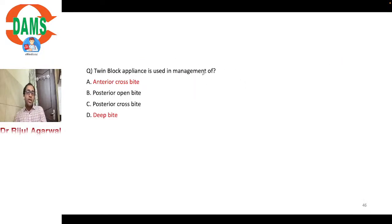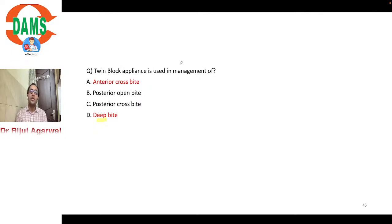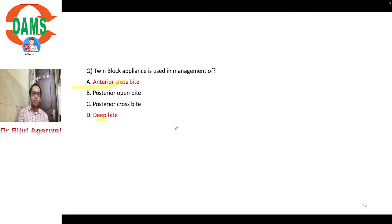Twin block appliance is used in management of: anterior crossbite, posterior open bite, posterior crossbite, or deep bite? The competitive exam book gives deep bite as the answer, which is correct. However, a Class 3 type twin block modification can also be used for correction of anterior crossbite. So option A (anterior crossbite) is also correct but option D (deep bite) is the better answer. The twin block consists of upper and lower plates with occlusally inclined bite planes that interlock at 45 degrees, trimmed in the upper premolar region.